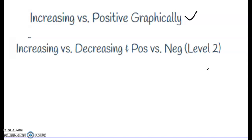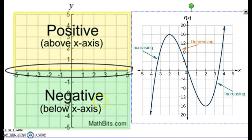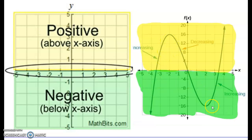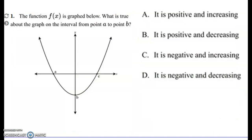We want to be able to describe intervals where they're increasing, positive, or both. Looking at this chart: positives are above the x-axis, negatives are below the x-axis. Increasing means going up, decreasing means going down. The key point is not to confuse increasing with positive — just focus on top being positive and bottom being negative.